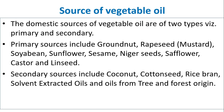Sources of vegetable oil: The domestic sources of vegetable oil are of two types — primary and secondary. Primary sources include groundnut, rapeseed, soya bean, sunflower, sesame, niger seeds, safflower, castor and linseed.